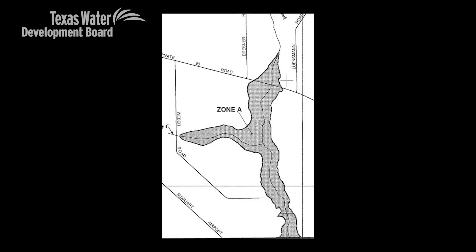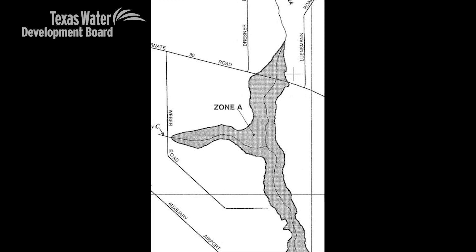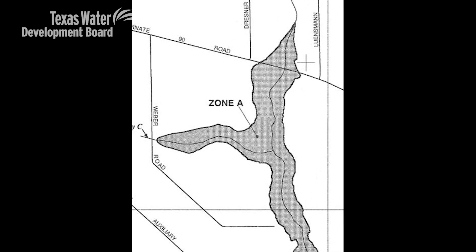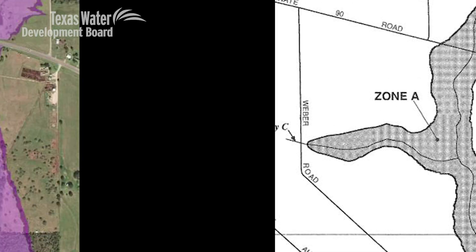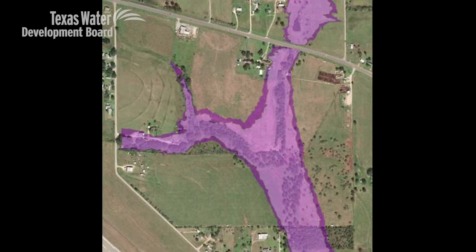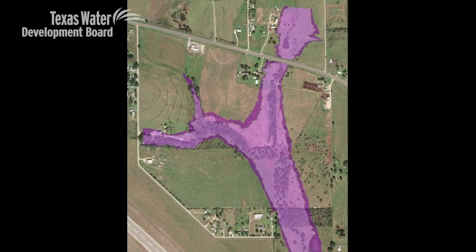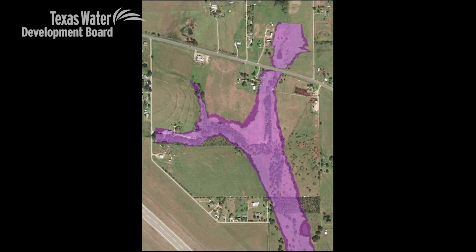Older floodplain maps were derived from the old U.S. Geological Survey 30-meter or 10-meter digital elevation models. It was a representation of the terrain, but it was a 30 by 30 meter grid, where now we use a one meter by one meter grid to represent the terrain — so it's a lot more detailed and accurate. It gives us that real detailed picture of the terrain to understand where the high spots and the low spots are, and the low spots tend to be the ones more susceptible to flooding.